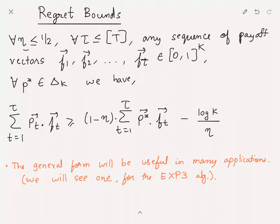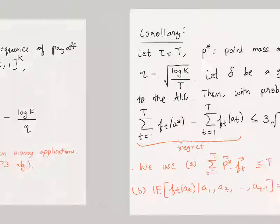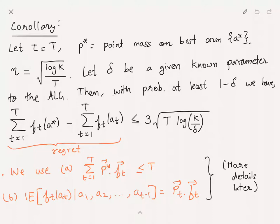We will prove this statement and also derive this corollary which will bound the regret. In the corollary we set tau to be T. We want to look at the total cumulative reward up to T time steps, and p* is just going to be the point mass on the best arm, let me call it a*. So p* is just a point mass distribution.